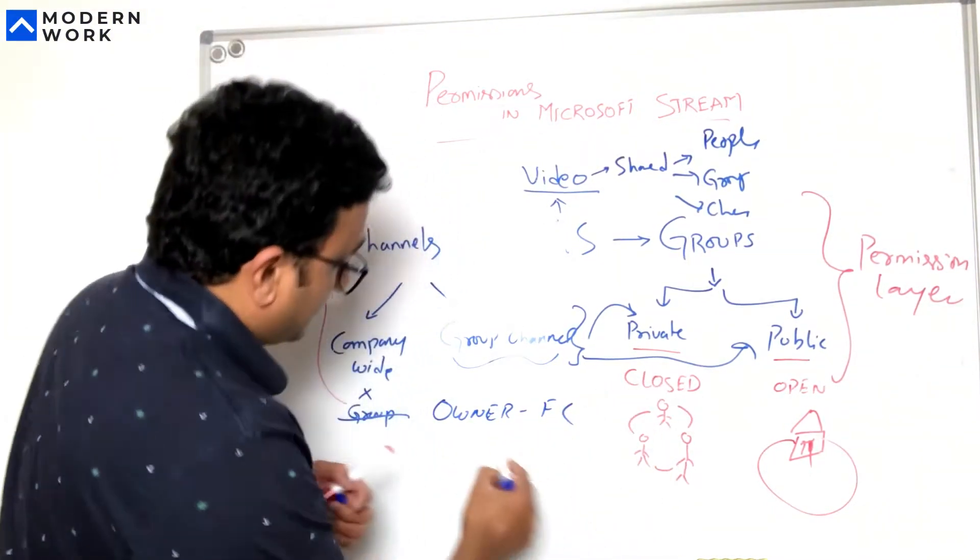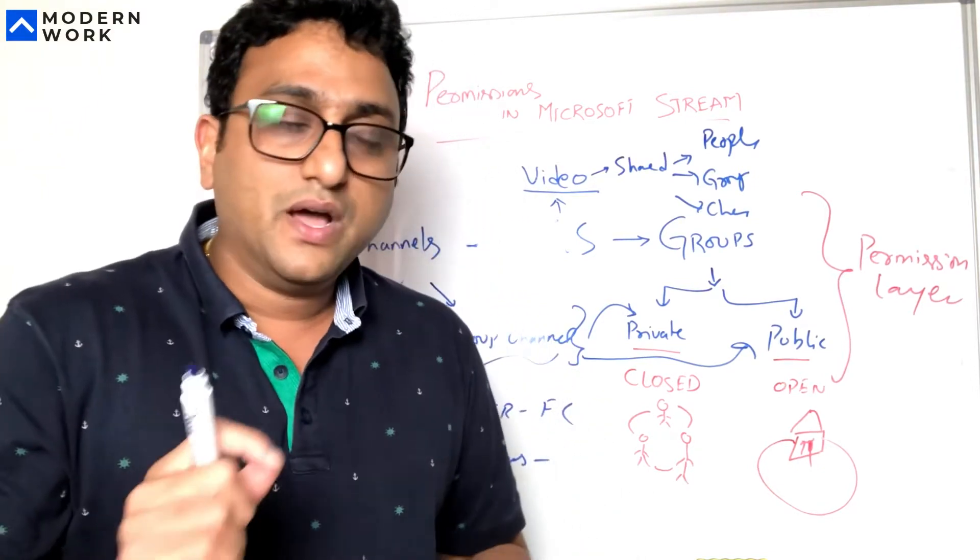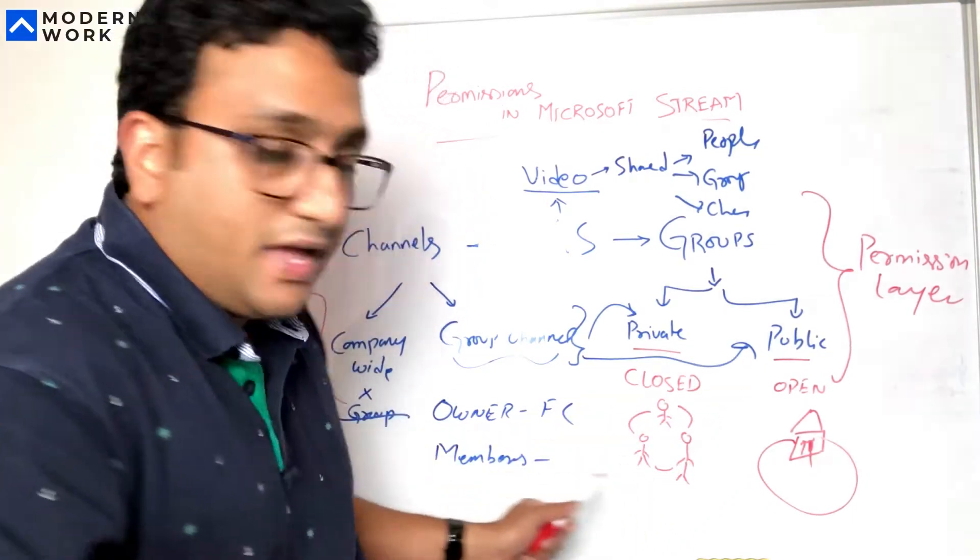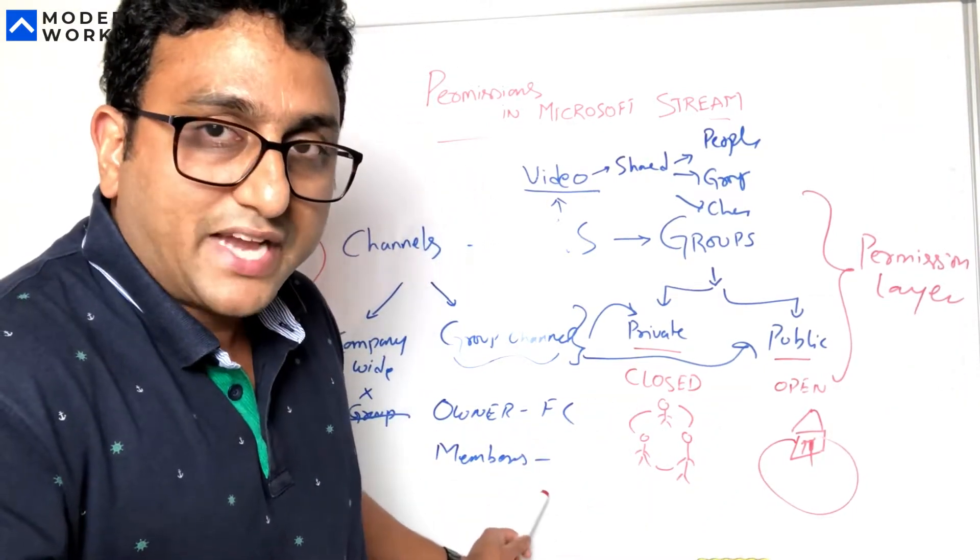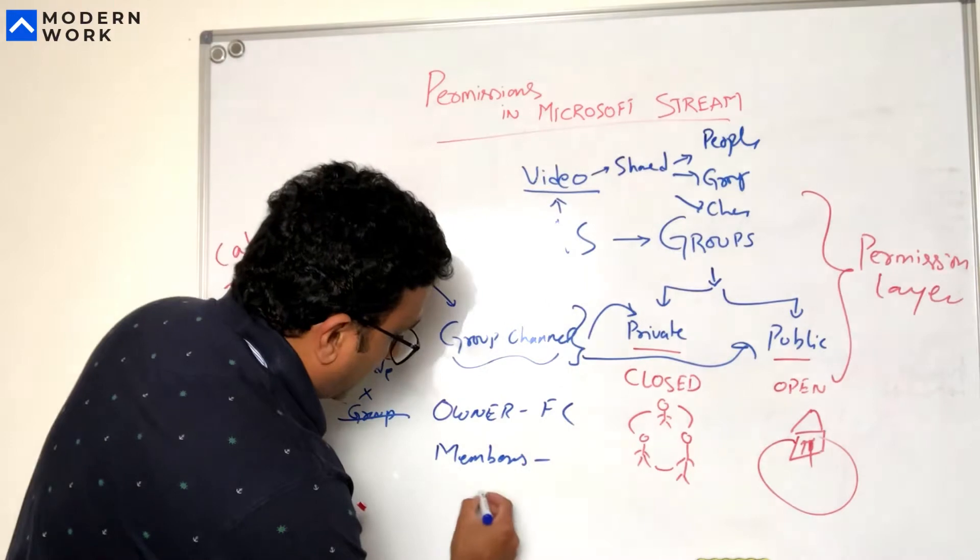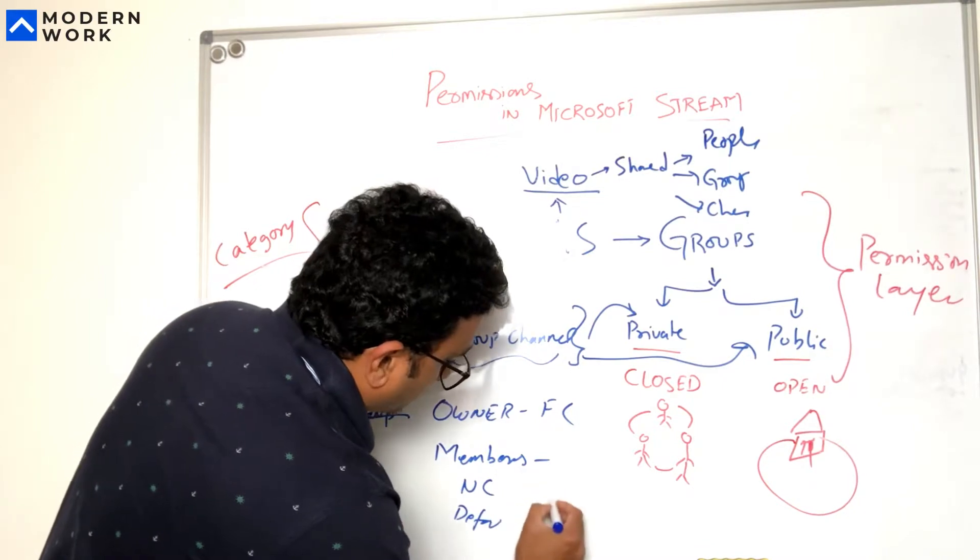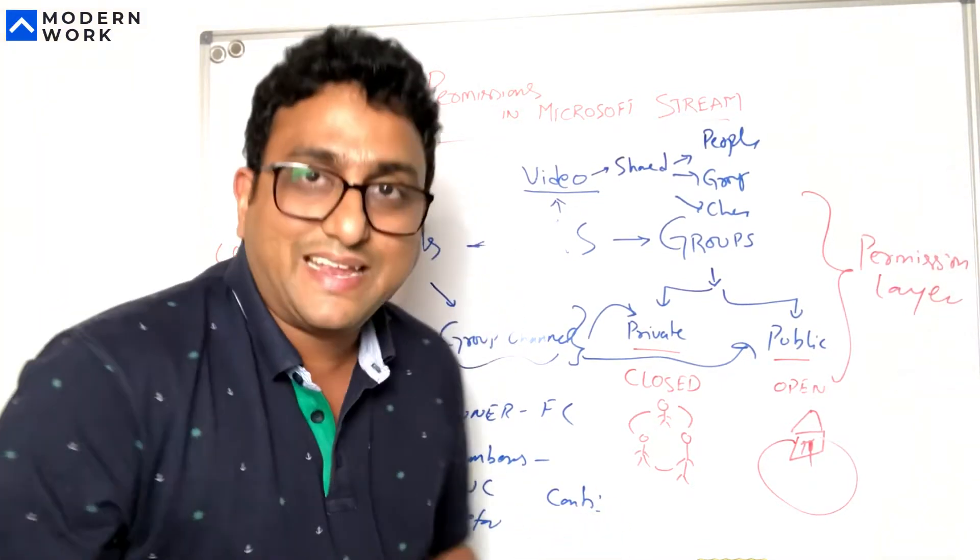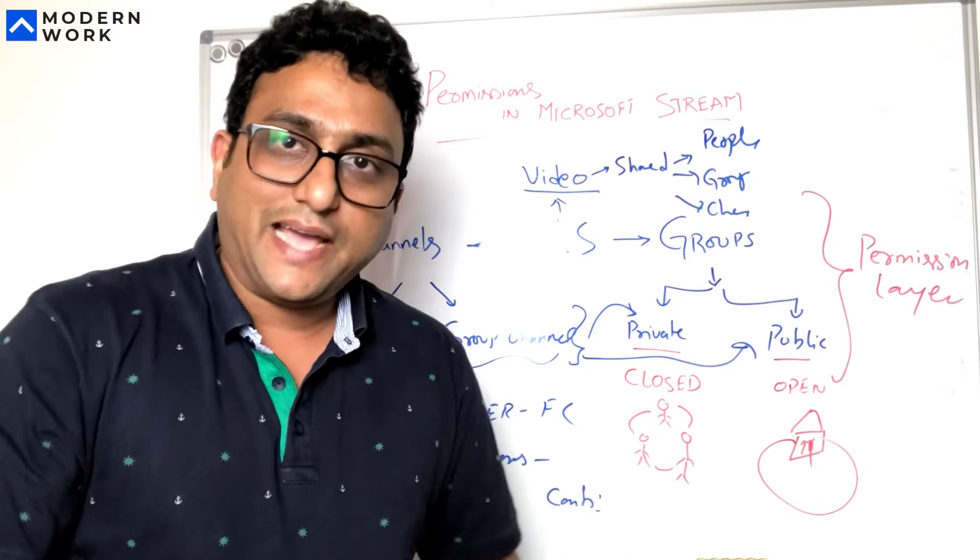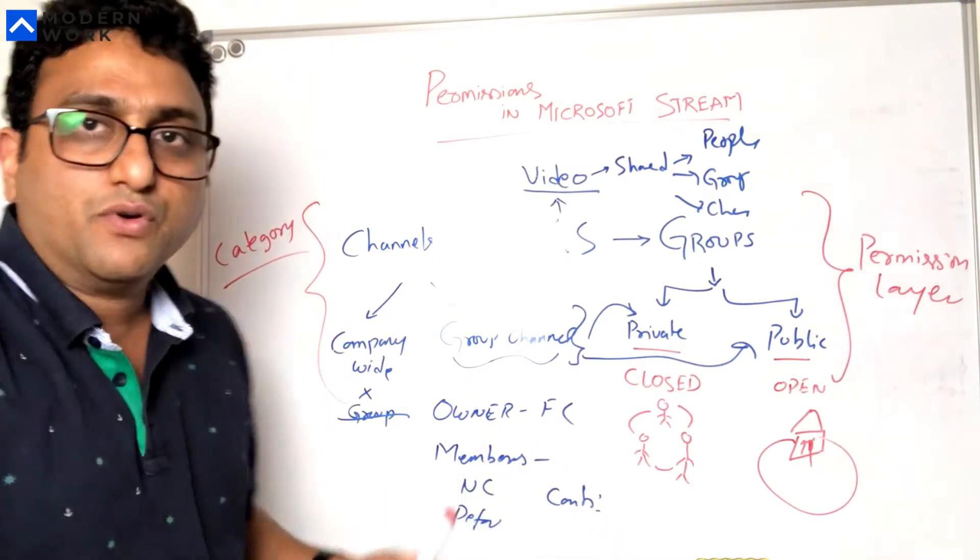Then you have members. By default members will only have view rights, they can only view the videos within everything within the group. But there's an option to actually enable the members as contributors. Within members you have non-contributors, that's the default, and then you also have contributors. Contributors get access to actually add more channels to a group or delete channels or add videos into a channel which are part of the groups and so on.